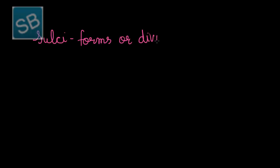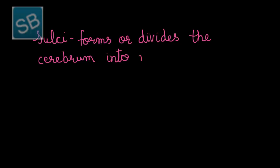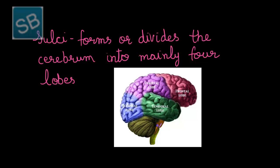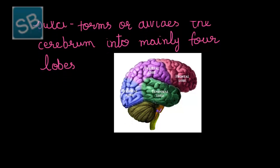These sulci, that is the depressions, divide the cerebrum into mainly four lobes. This figure depicts the four lobes of the cerebrum. The sulci formation occurs because of longitudinal fissures which divide the cerebrum into the anterior frontal lobe, the middle parietal lobe, the lateral temporal lobe, and the posterior occipital lobe — each with definite and specific functions.